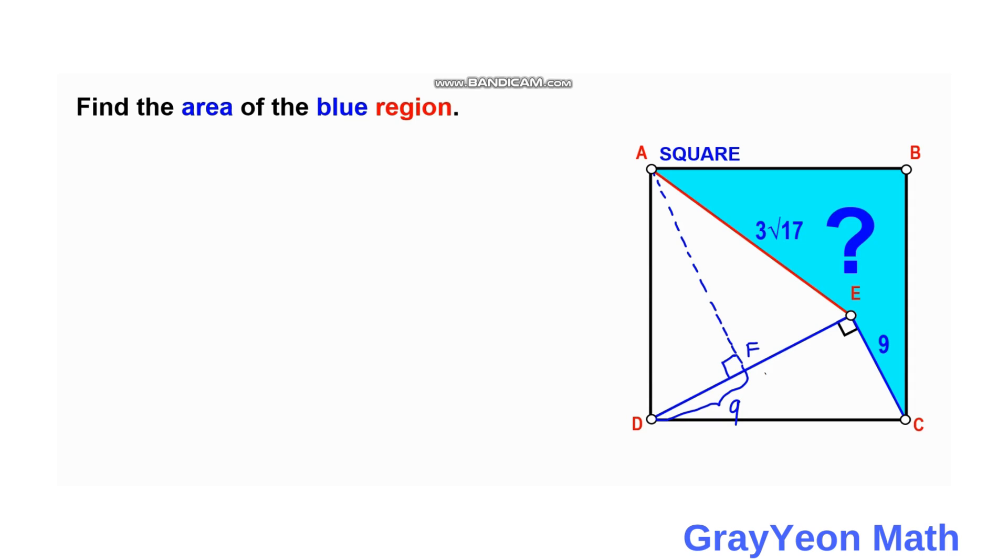And we label the side of the square to be S, and we label this length AF to be X. And if D to F is 9 and AD is X, so this length FE is X minus 9.